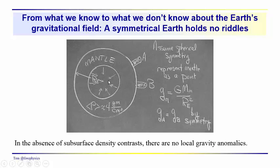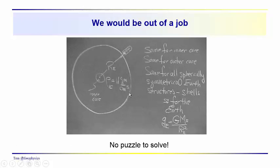We've also mentioned that if there are no subsurface density contrasts, there are no local gravity anomalies. The anomalies that we've talked about are associated with the shape of the Earth, elevation relative to the center of the Earth, and so on. So basically, we'd be out of a job. There wouldn't be any puzzle to solve.